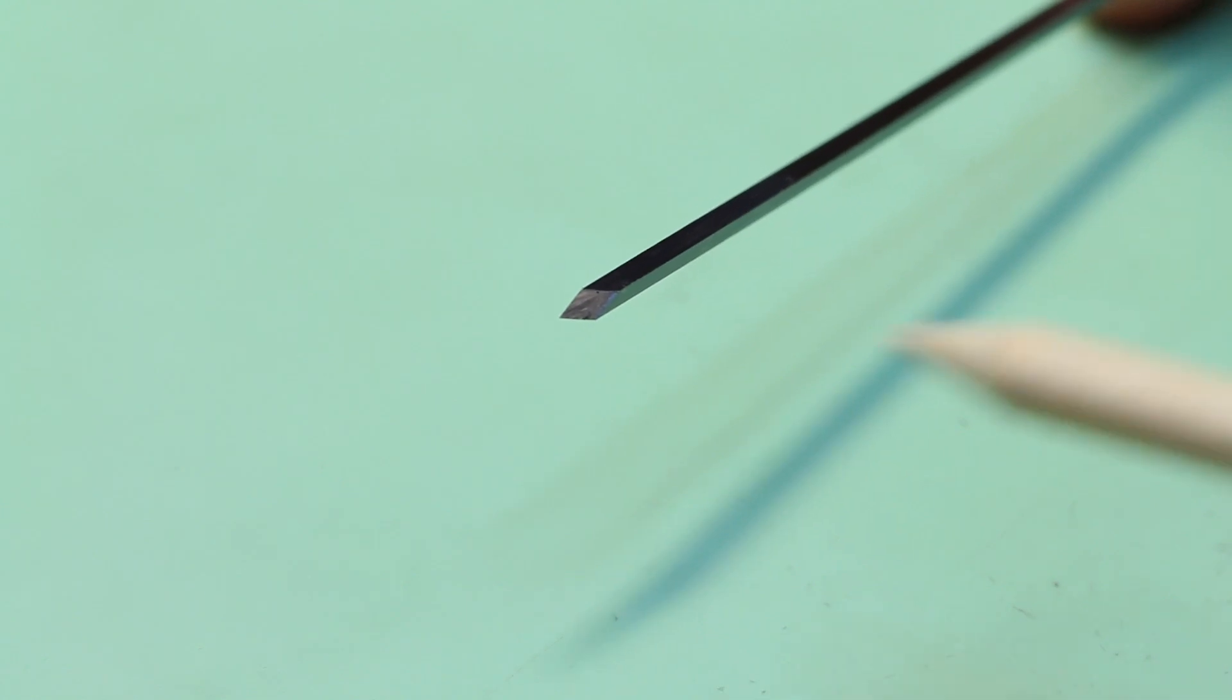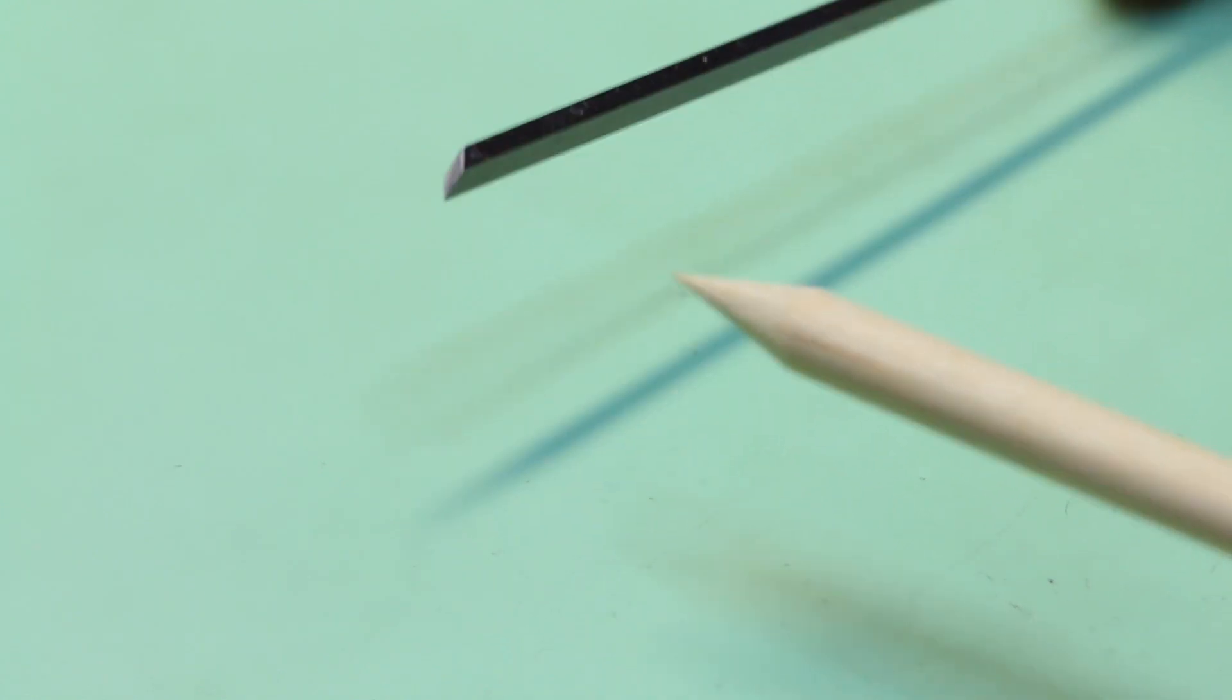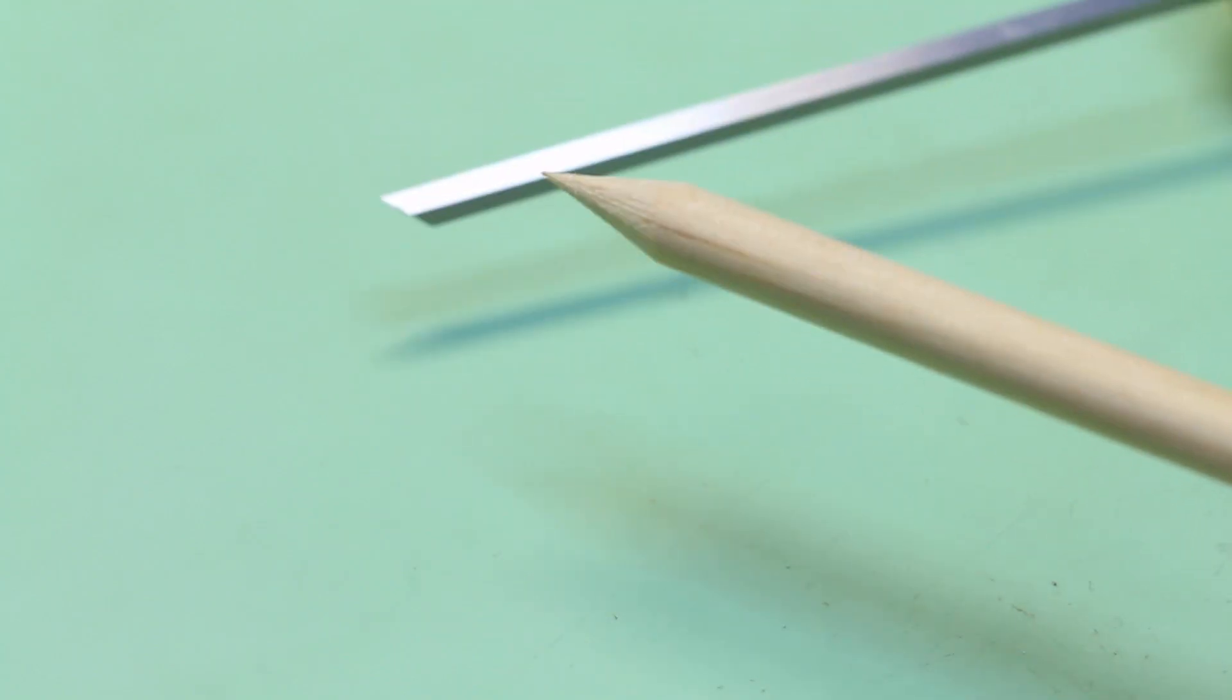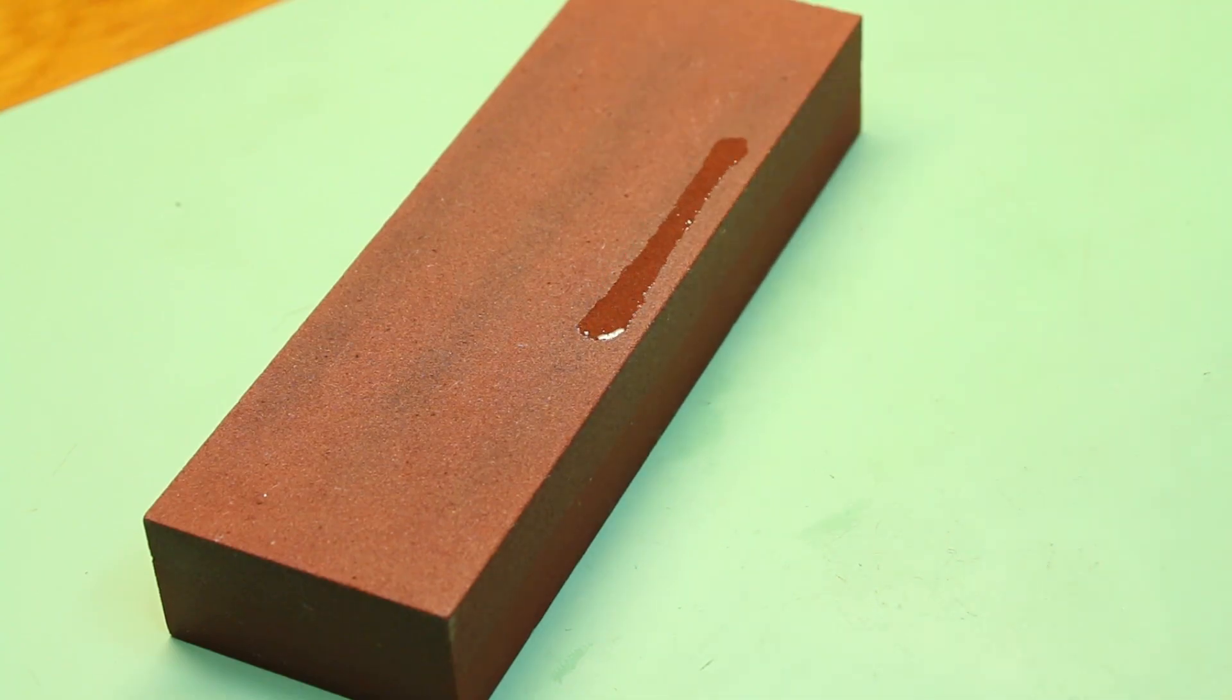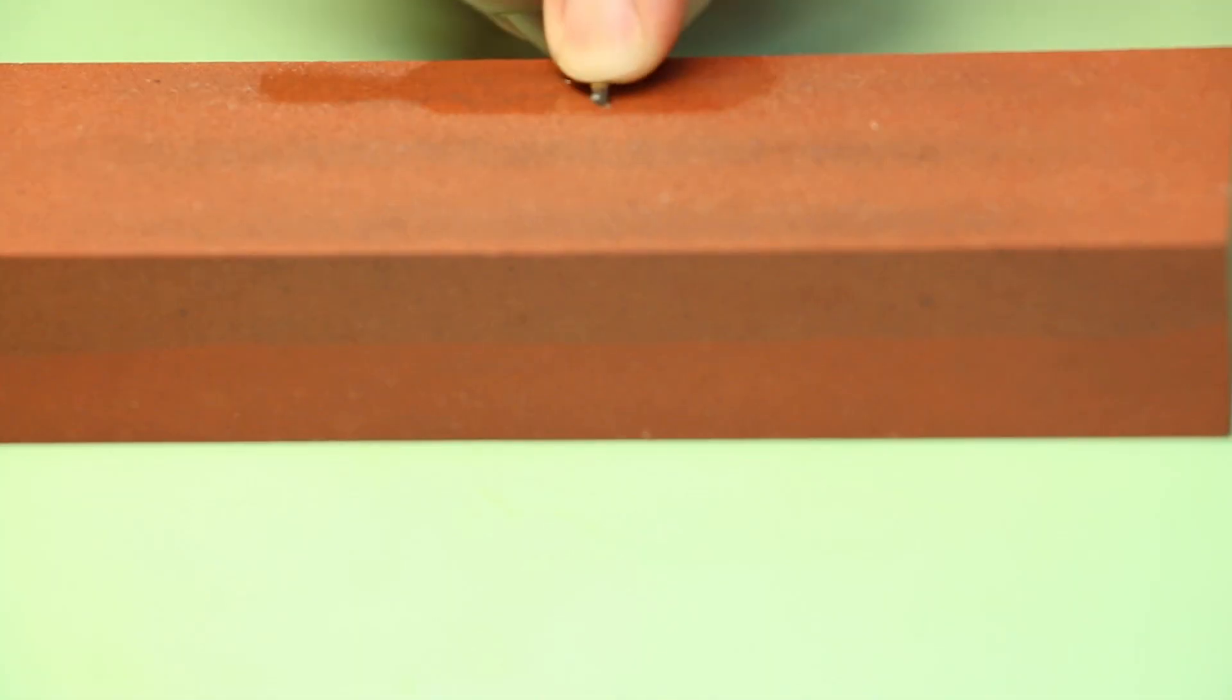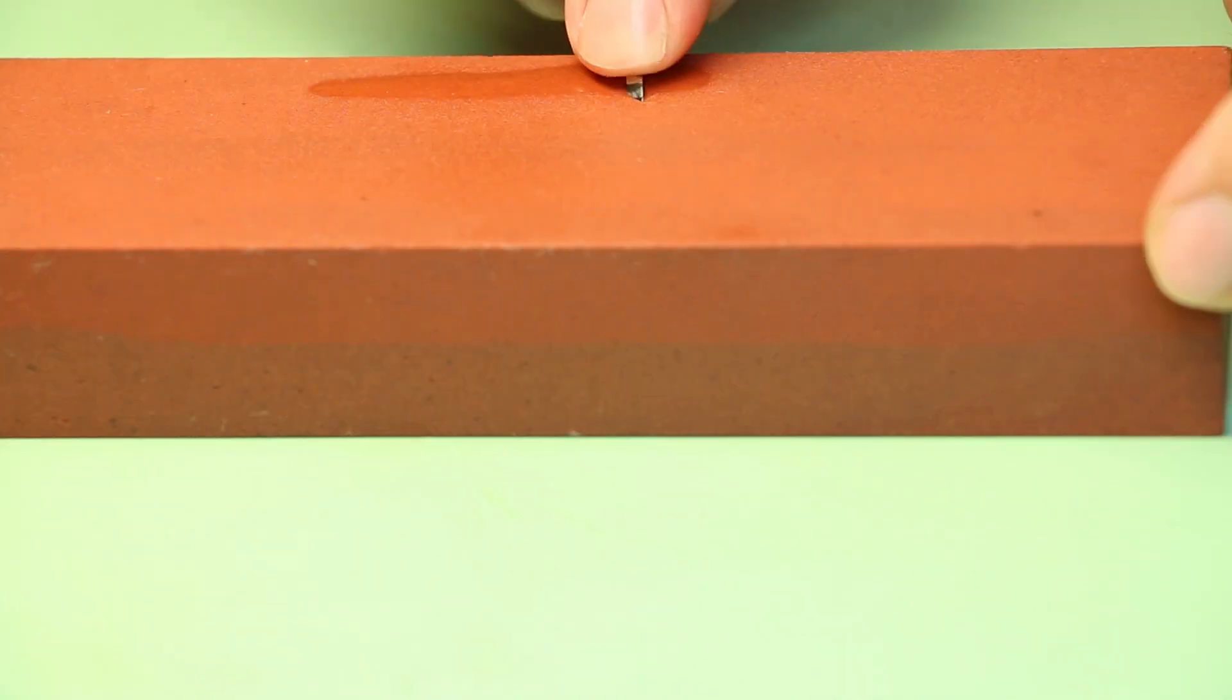So before we start sharpening the actual face of the graver, we need to sharpen these two cutting edges, this one here and this one here. What you'll find is that these surfaces have very fine ridges when left untouched. It will result in a lower grade finish on the object that you were cutting. We sharpen these on a medium and then the fine.